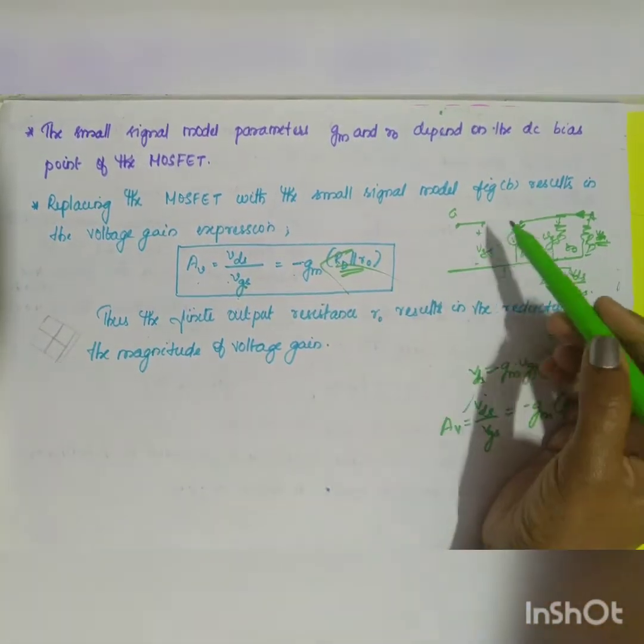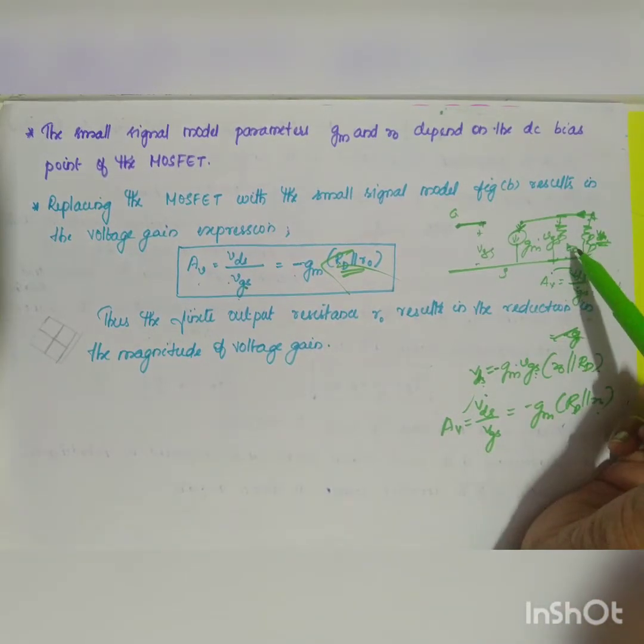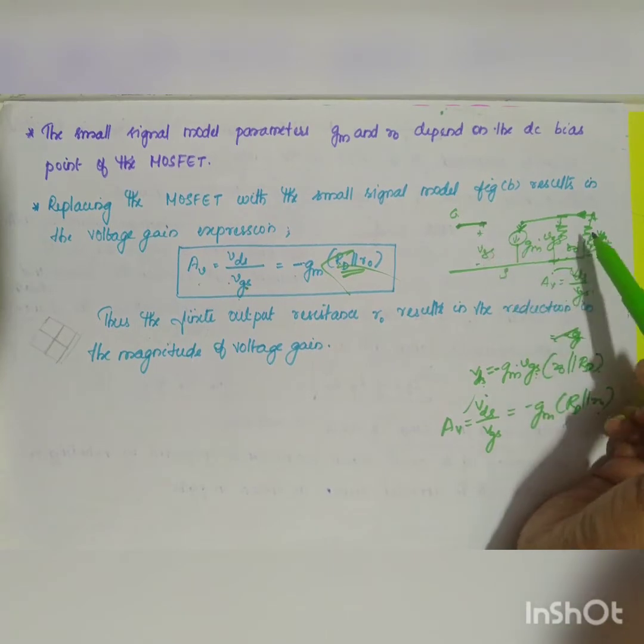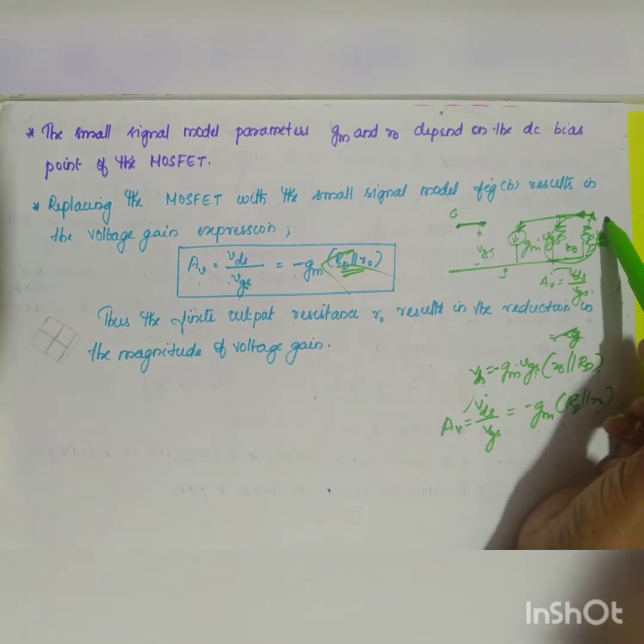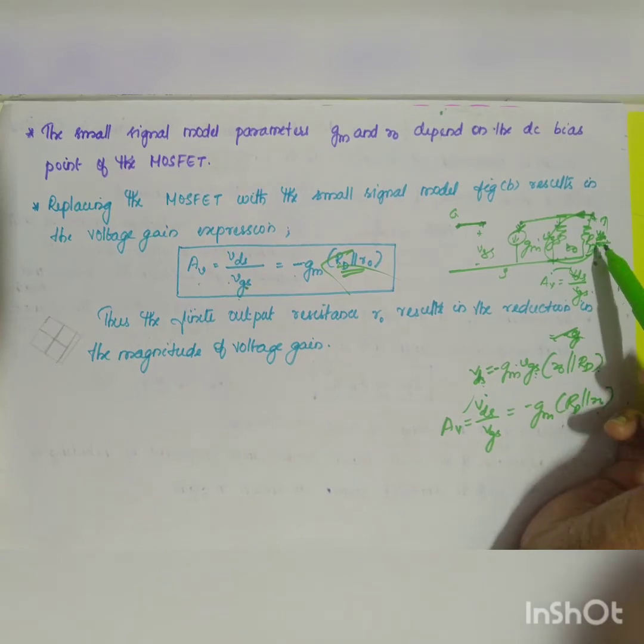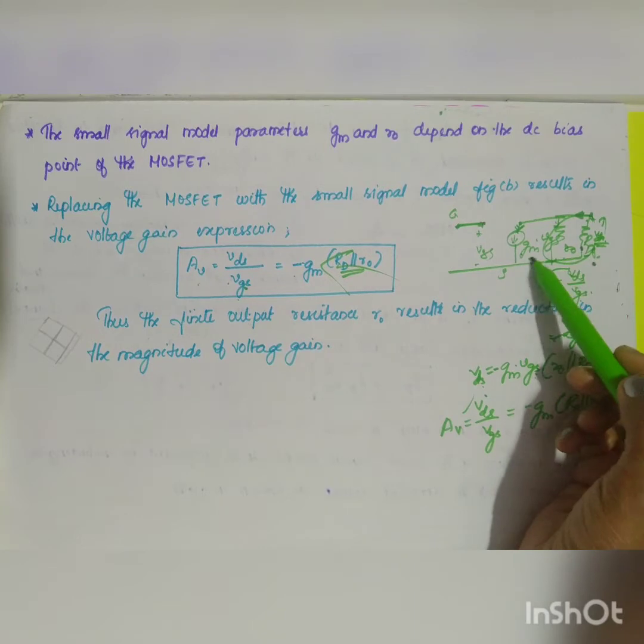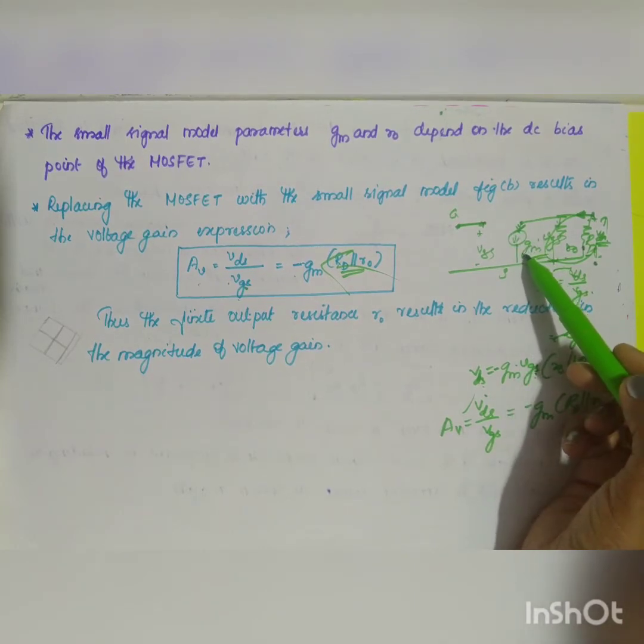If you take this diagram, the gate same diagram which I have drawn with channel length modulation. In this, what will be your output resistance? This is your output voltage. If I want to find out the output voltage, what will be V naught, which is equal to VDS, which will be equal to current into your resistance. Current is equal to, in the opposite direction, that's why you will be having minus GM into VGS.